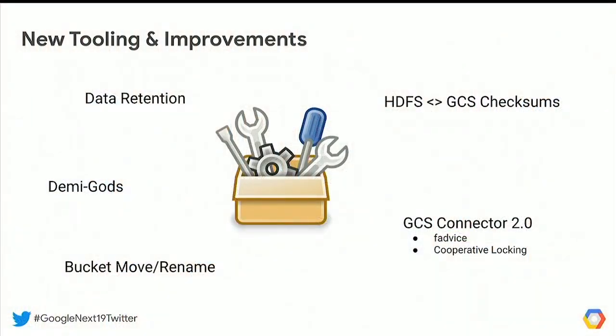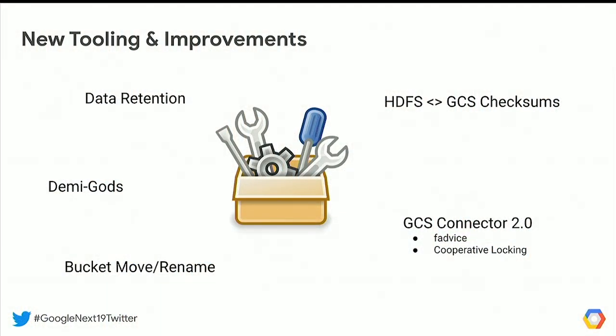Can you tell us about GCS Connector 2.0 performance improvements? In the next week or two, we are going to increment the version of GCS Connector from 1.x to 2.0. There are a couple of dozen major improvements in there, a lot of which were driven by the Twitter project. One feature added is a cooperative locking mechanism — in an object store, there's no such thing as an inode where directories are a first-class citizen, so as items move around and people move directories, a lock is taken so that multiple users moving directories don't conflict. This is currently in alpha but should be coming out very soon.